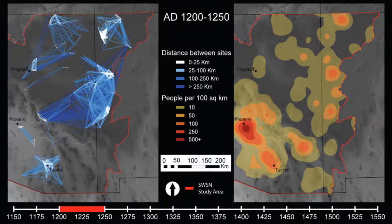This video displays a series of images designed to help visualize the relationship between population density and social networks across the Southwest Social Networks project area through time. Each image represents one of six 50-year intervals between AD 1200 and 1500, with the date range indicated by the red bar at the bottom of the video.